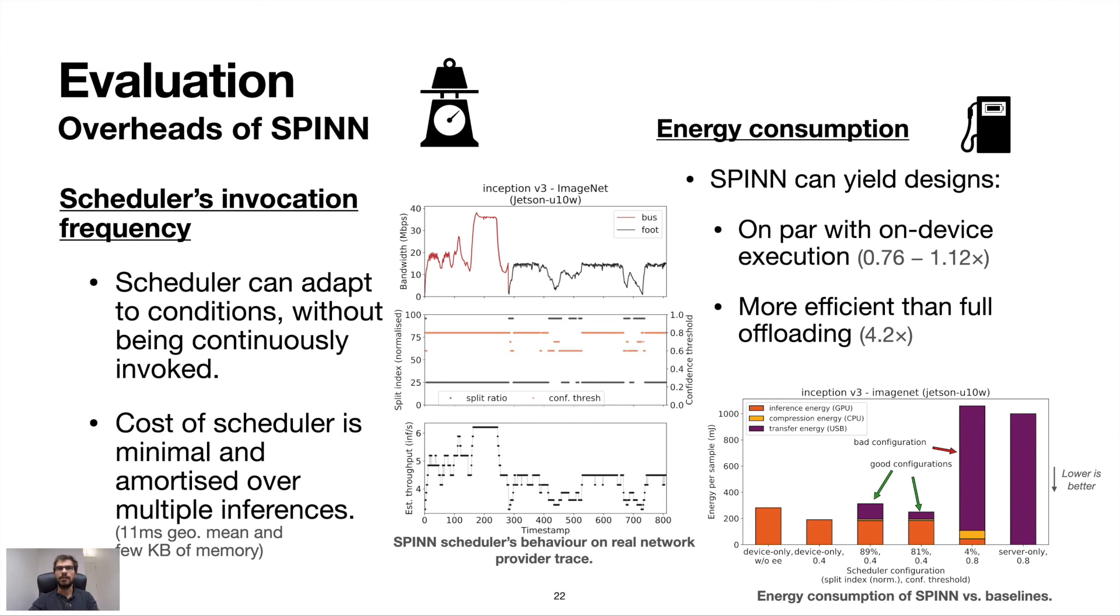Simultaneously, the energy consumed during inference is on par with device-only execution without early exits, even without explicitly optimizing for it. The rightmost graph depicts the energy consumed per inference in millijoules, going from full on-device towards full remote execution. From the first two bars, we can quantify the energy benefit of early exits. The next three bars illustrate the five times difference between good and bad on-purpose scheduler configurations due to an early split point that leads to high data volumes to be transferred and the high confidence threshold leading to lower early exit rates. Last, in the full offloading scenario, we can easily witness that the energy cost is dominated by the transfer.